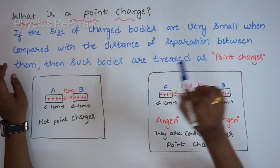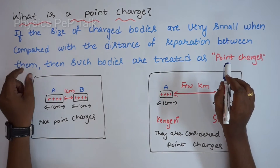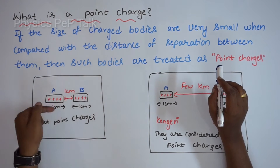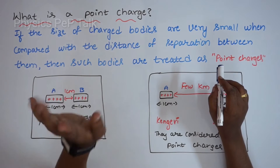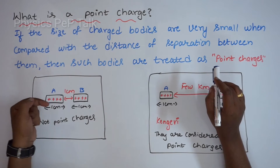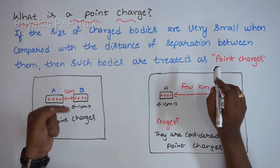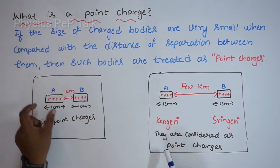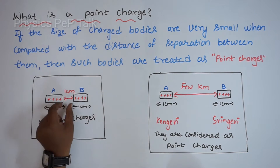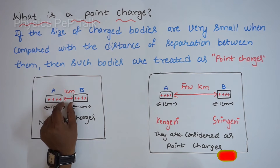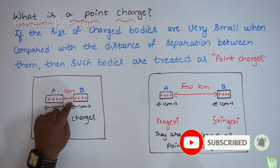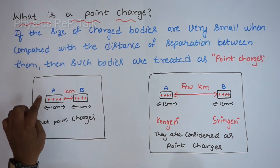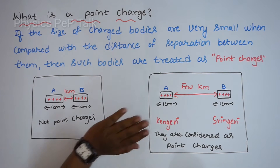For example, let us consider two bodies A and B, each of length one centimeter. The distance of separation between them is also one centimeter. Now the distance of separation is comparable with the size of the charged body. In this case, we do not consider them as point charges.